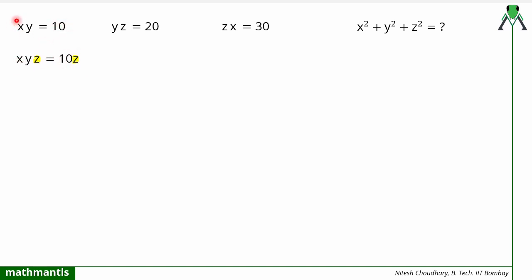So the idea is to multiply by that variable which is not available here. Here it is x and y, so I will multiply both sides by z. And this one, there is no x on both sides, so I will multiply both sides with x. So it will become xyz equal to 20x.